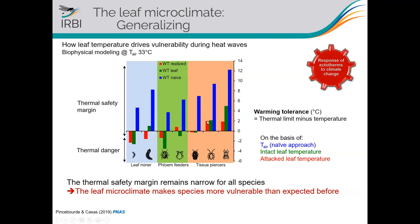This was actually surprising: the leaf macroclimate makes all the species relatively equally vulnerable to heat waves, much more than predicted from atmospheric temperature alone.